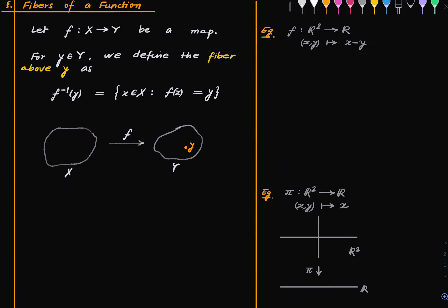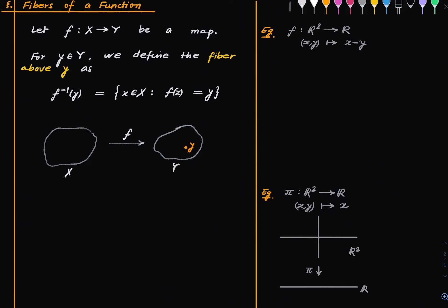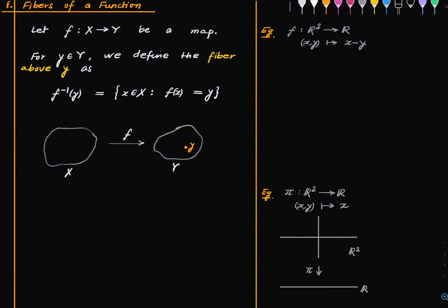This is also called the preimage of little y. The notion of preimage is a little bit more general — if you have any subset of the target set Y, you can talk about the preimage, which is all those points which map inside S. So that's a recollection of the notion of fiber.